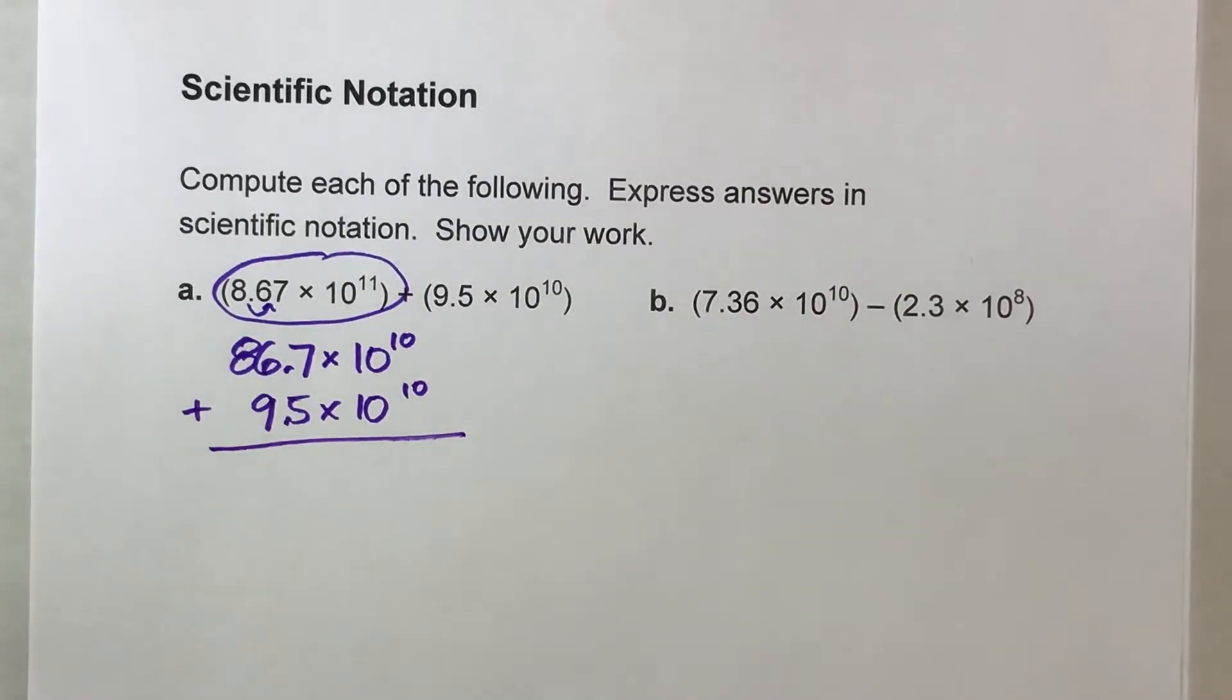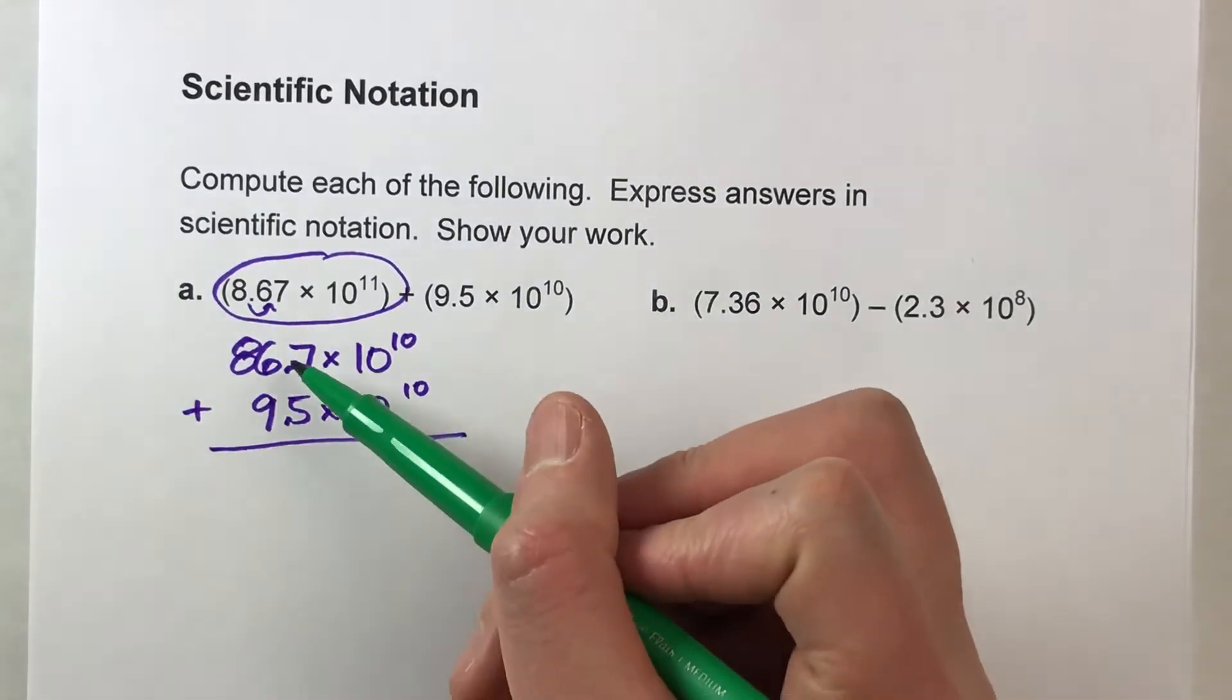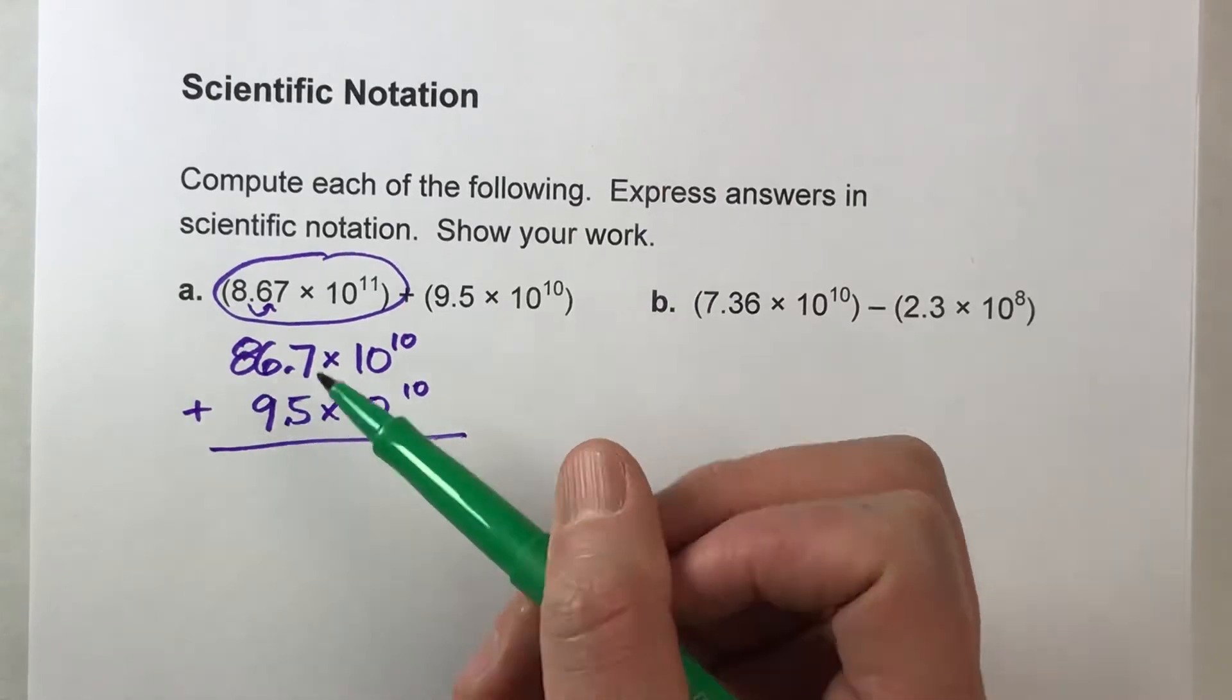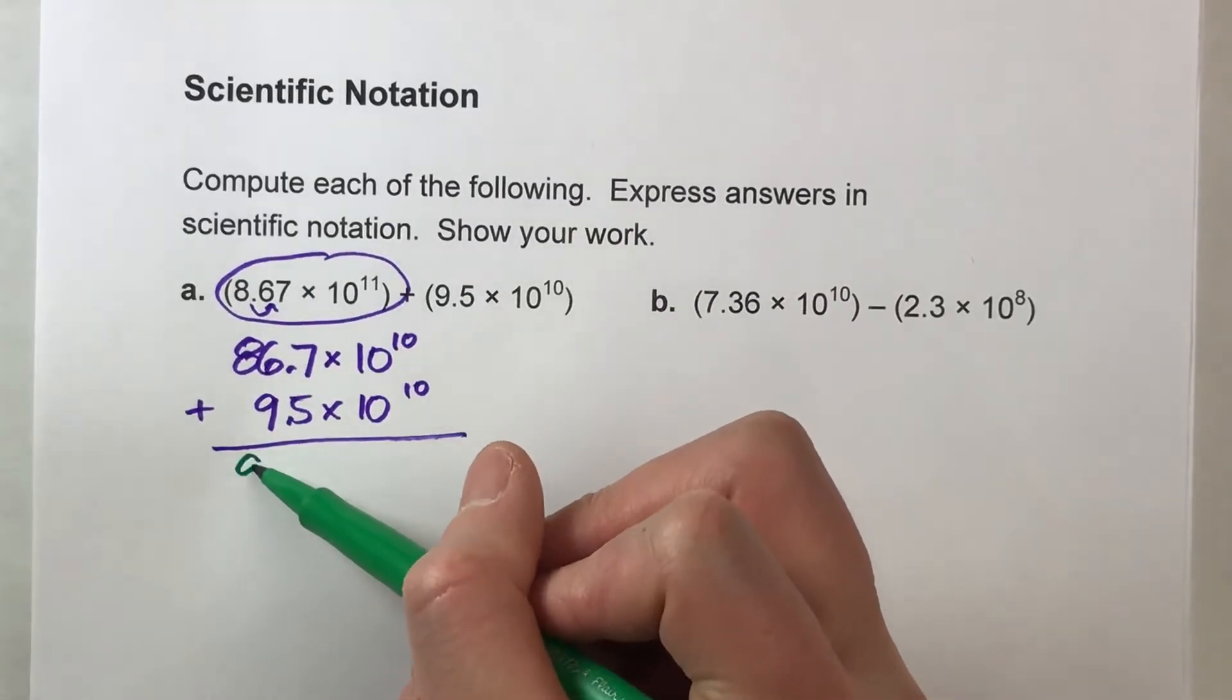So now it's a lot easier to add up. Now when you add these, what we're going to do is we're going to add the coefficients together, 86.7 plus 9.5, which is 96.2.